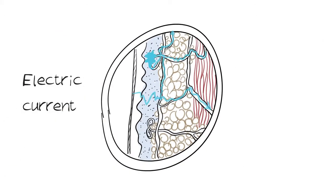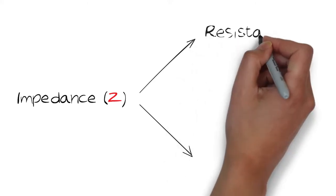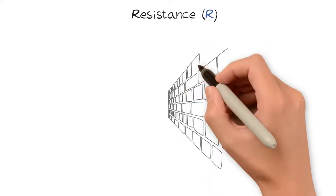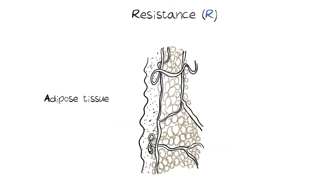Impedance is the measure of how current is slowed or stopped as it passes through a material. Impedance has two components, resistance and reactance. Resistance is the measure of the amount of electrical current a substance will stop. For example, adipose tissue is about 80% fat. Fat is an excellent resistor to current.